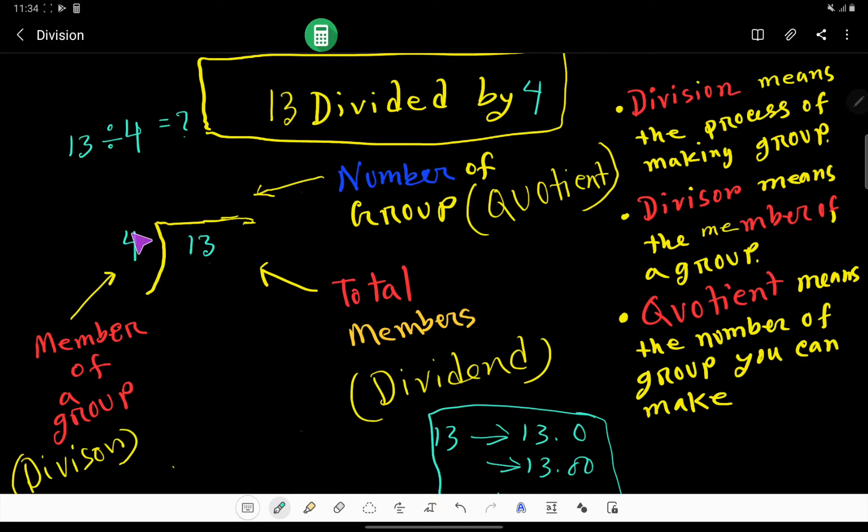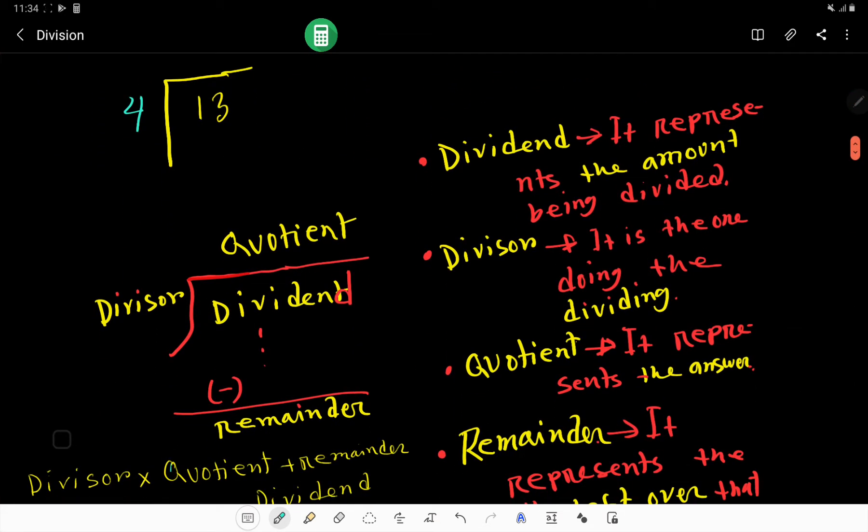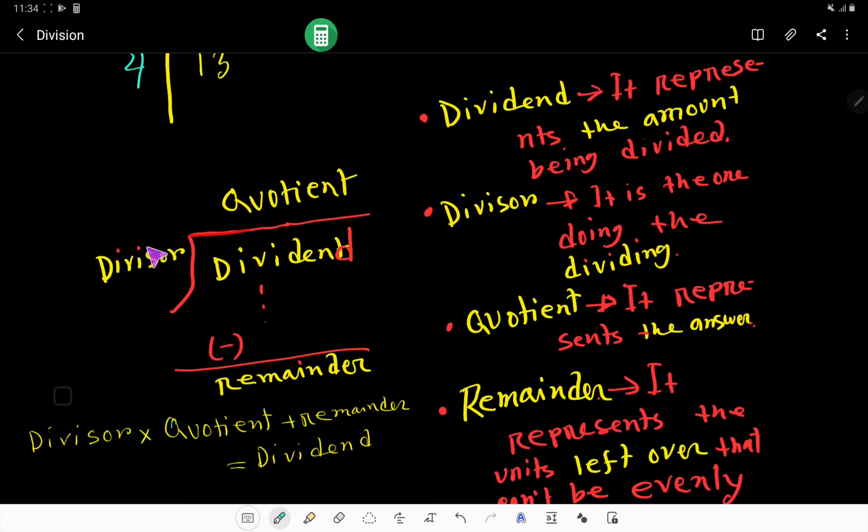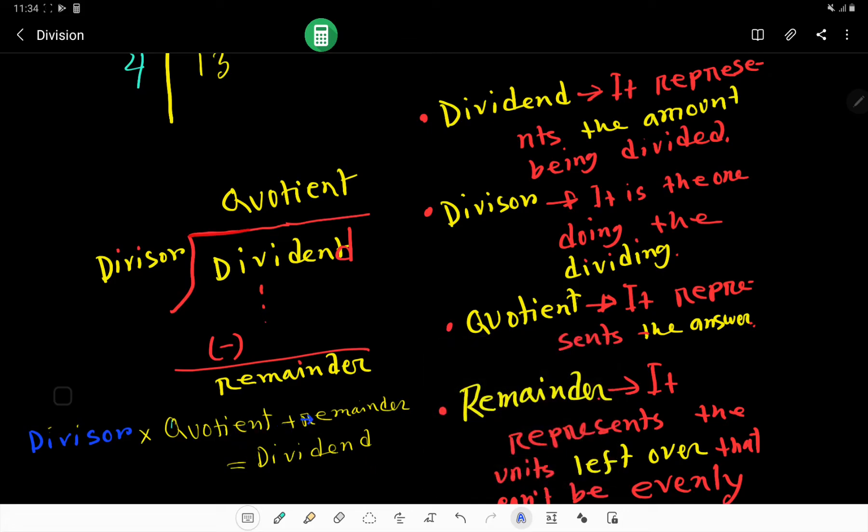Here we'll get the quotient. This is the standard method to present a division in long form. The divisor will divide the dividend and you will get the quotient, and sometimes we'll get a remainder. An important thing to remember: if I multiply divisor times quotient and add remainder, then I will get the dividend.